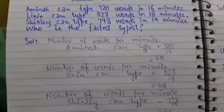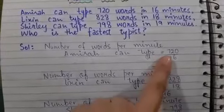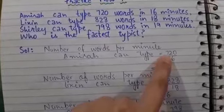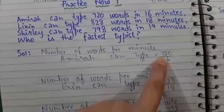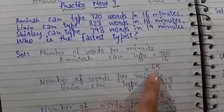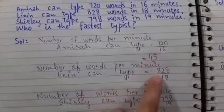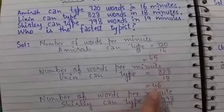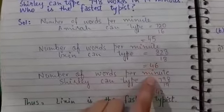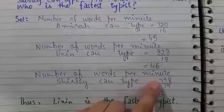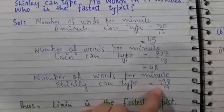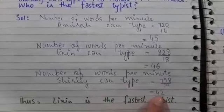Firstly, for Amira, the formula is number of words divided by time. So 720 divided by 16 equals 45. Similarly, for Lixen, number of words divided by time, the answer is 46. And for Shirley, the number of words is 798 and the time is 19, so the answer is 42.